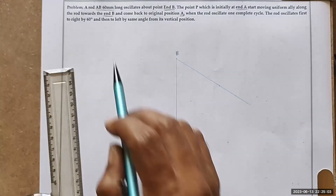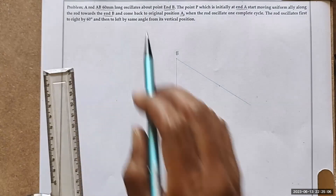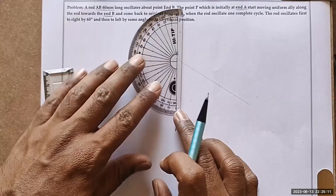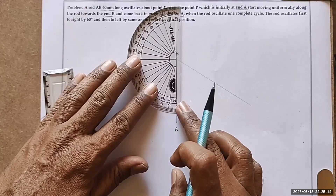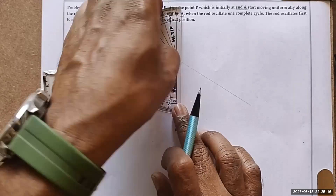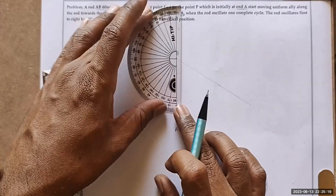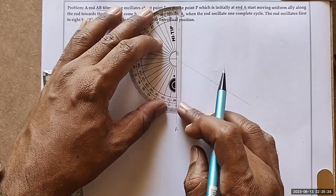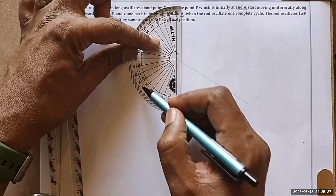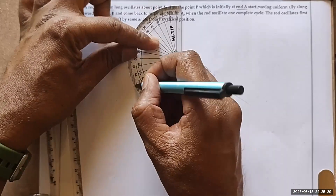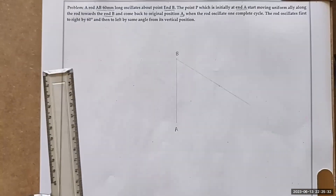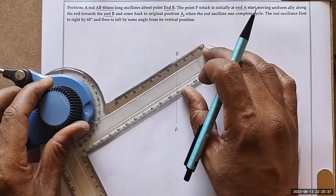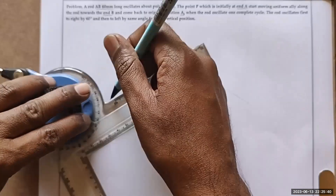It is also oscillating towards the left at the same angle from the vertical — 60 degrees. So again, we place the protractor, matching zero with point A, and count 10, 20, 30, 40, 50, 60 on the left side. We then draw the extreme left position of the rod at this 60-degree point.